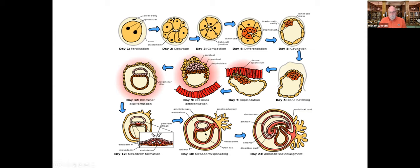Once the mesoderm starts to spread, greater parts develop. By this point you have attachment and a more formalized umbilical cord creating a direct connection to the mother's uterine wall. Energy has to be brought in and waste materials taken out — at first by fairly simple transfusion of material between cells, but now a real transport system needs to develop.